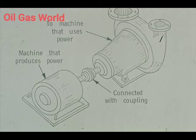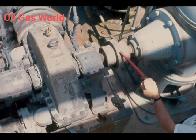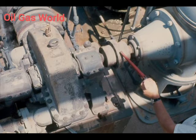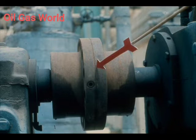Let's look at some examples of couplings in common use. This coupling joins a turbine to a gear reducer. The gear reducer then decreases the RPM of the drive shaft before transferring power to another piece of equipment. Our second example connects the driver, a steam turbine, to the driven equipment, a centrifugal compressor.